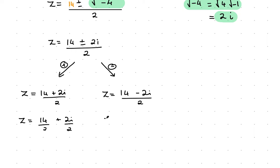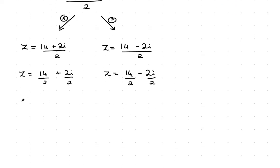14 over 2 and 2i over 2 split into two fractions with a common denominator. We have z equals 7 plus 1i and z equals 7 minus 1i.